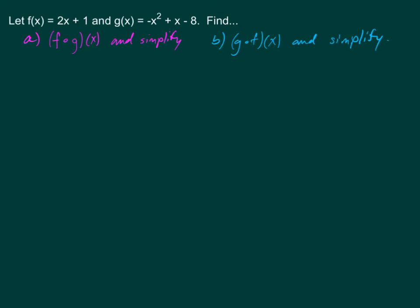In part A, when you're asked to find f composed g of x, you're being asked to find f of g of x. You might notice that I'm writing this g of x very small, because I want you to understand that all we're going to be doing is taking this function and substituting it into this function. It would be good if we could knock that down by a letter — right now we have three different letters.